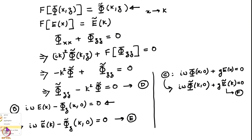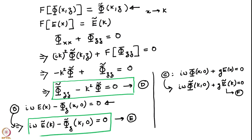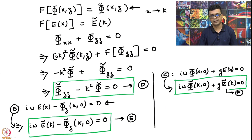Looking at equation D, you can see that the Laplace equation written in the Fourier domain is now like an ordinary differential equation because the derivative with respect to x has been eliminated and appears as k². The coefficient of Φ̃ in the first term is 1 and in the second term is k², and it does not depend on z. I can solve this as if it is an ordinary differential equation, but the constants of integration are not really constants — they are functions of k.